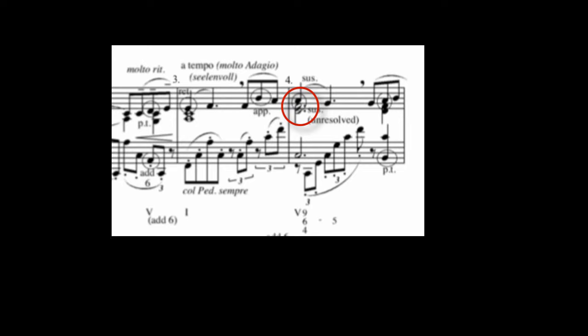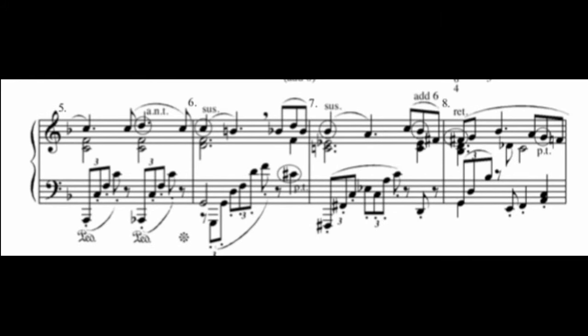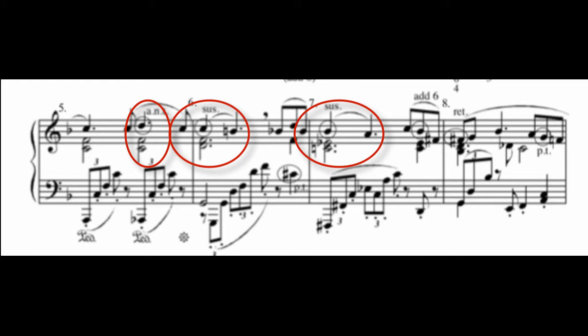You should take a moment to look at the similar strong beat dissonances in measures 5, 6, 7, and 8. Measure 5 has an accented neighbor tone on the third beat. Look at the suspension on the first beat of measure 6, another suspension on the first beat of measure 7, and another retardation on the first beat of measure 8. It is the emphasis on such dissonance that gives much melody from the Romantic era its particular expressive character.